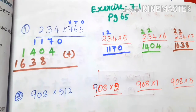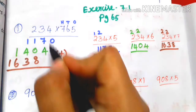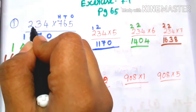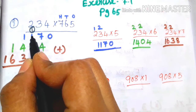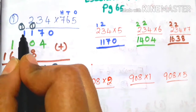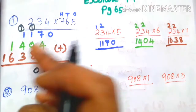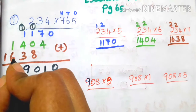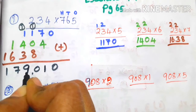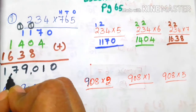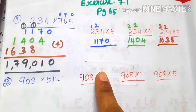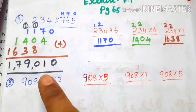Now we add the partial products. So: 0, then 7 plus 4 is 11, balance 1. 2 plus 8 is 10, so 0, balance 1. 1 plus 1 is 2, 2 plus 4 is 6, 6 plus 3 is 9. So 9. Then 1 plus 6 is 7, next carry 1. So the final answer is 1,79,010.